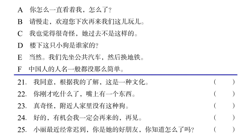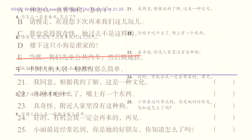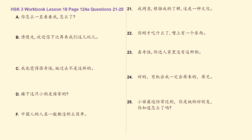In this activity, we have some sentences above that we have to combine with the sentences below. That way, we create small dialogues. Remember that we cannot use letter E because this sentence is used in the example. On the screen you see the sentences above on the left and the sentences below on the right.